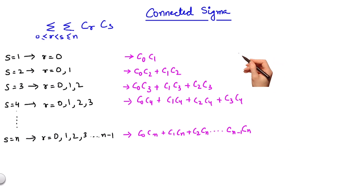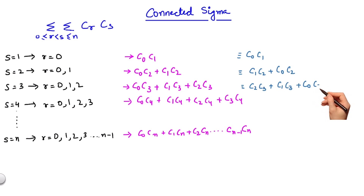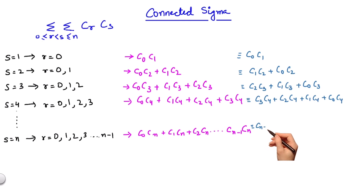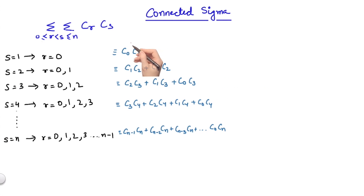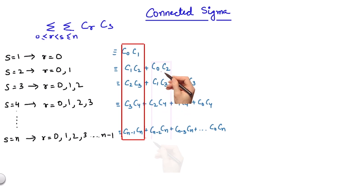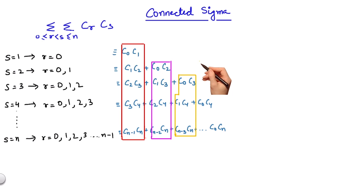Now I can rearrange these terms, reversing their order to group them into vertical sections: C0·C1; C1·C2 + C0·C2; C2·C3 + C1·C3 + C0·C3; C3·C4 + C2·C4 + C1·C4 + C0·C4; and so on until Cn-1·Cn + ... + C0·Cn. We will try and find out the sums of terms lying along the same vertical sections, and it turns out this is quite easy — we have done this already.